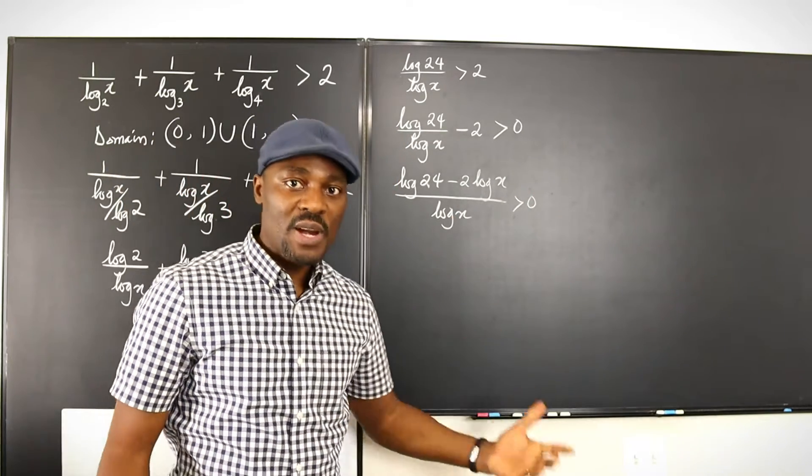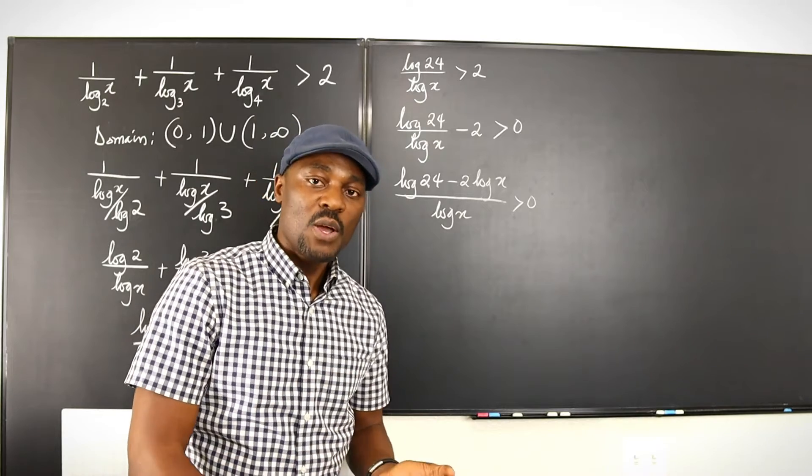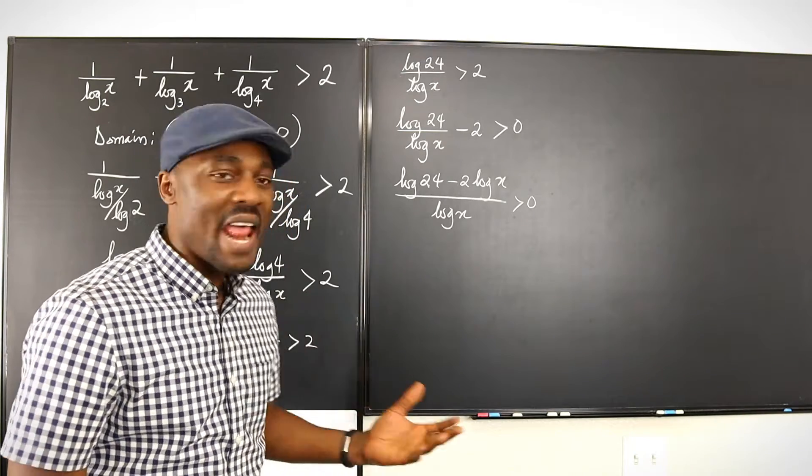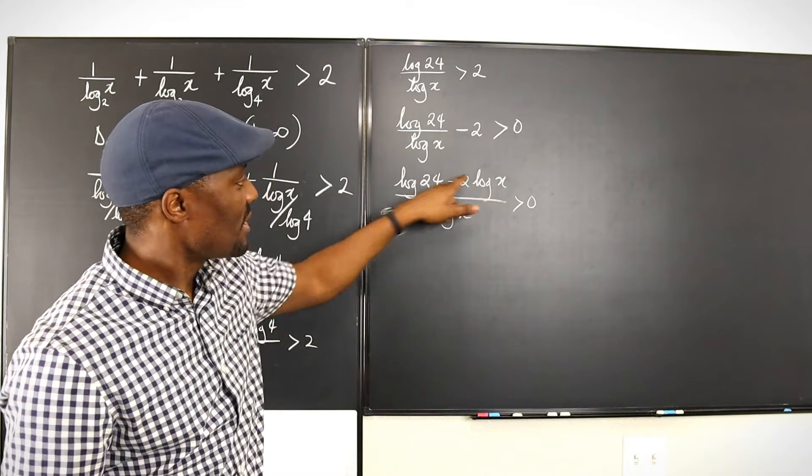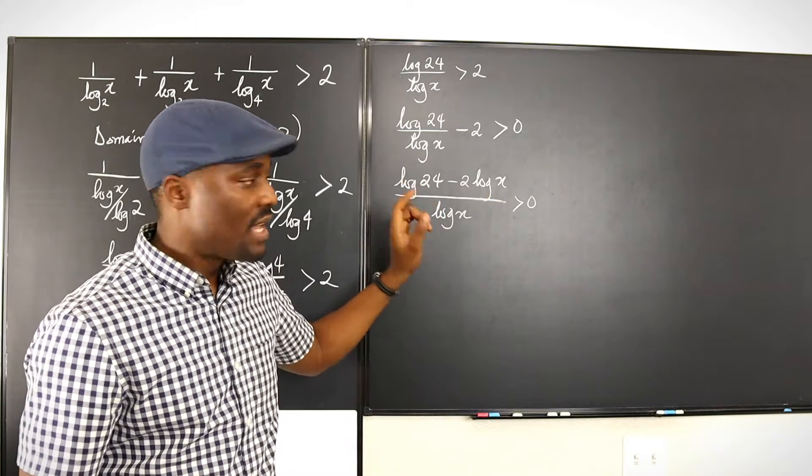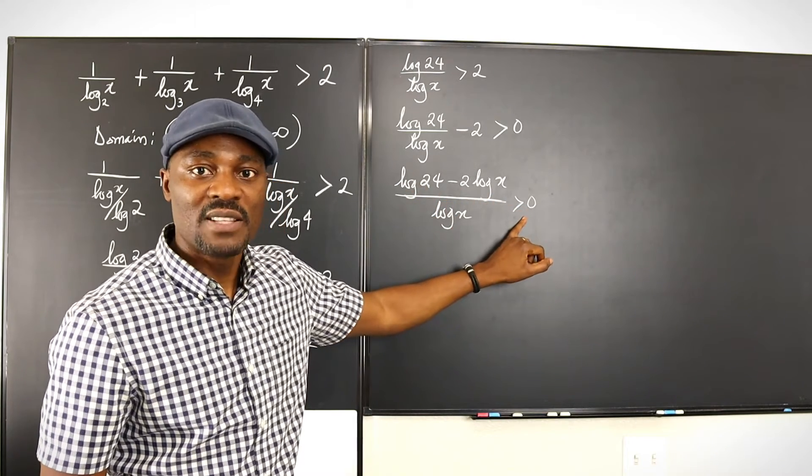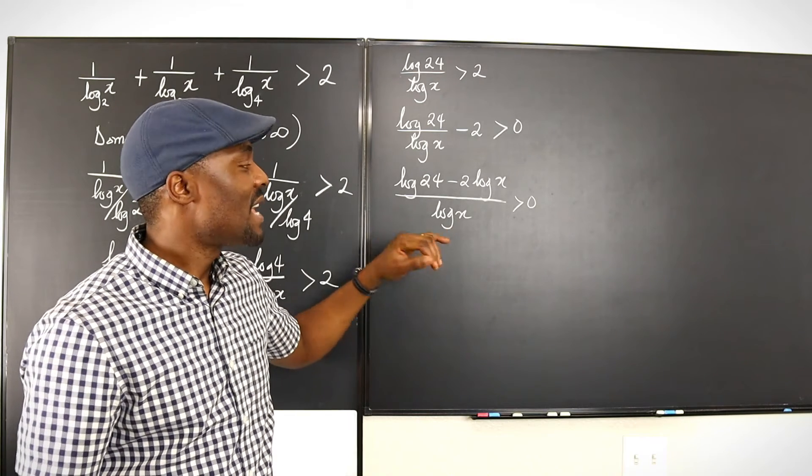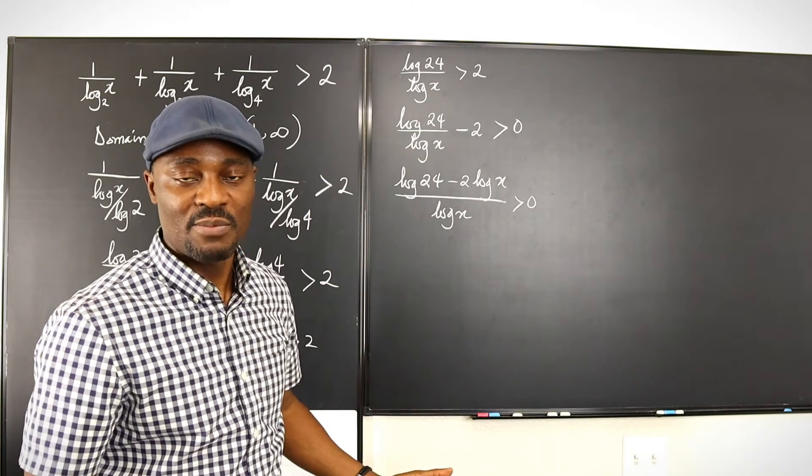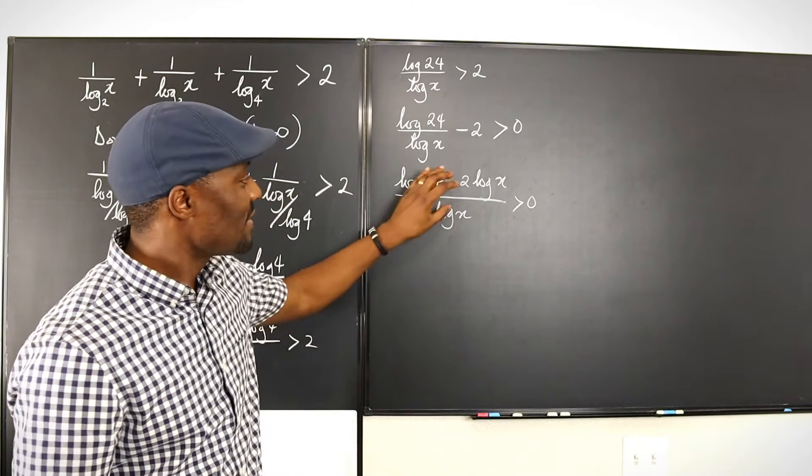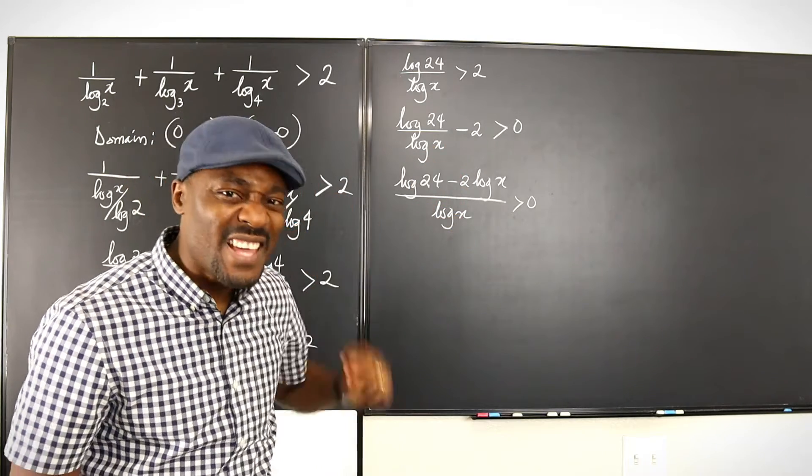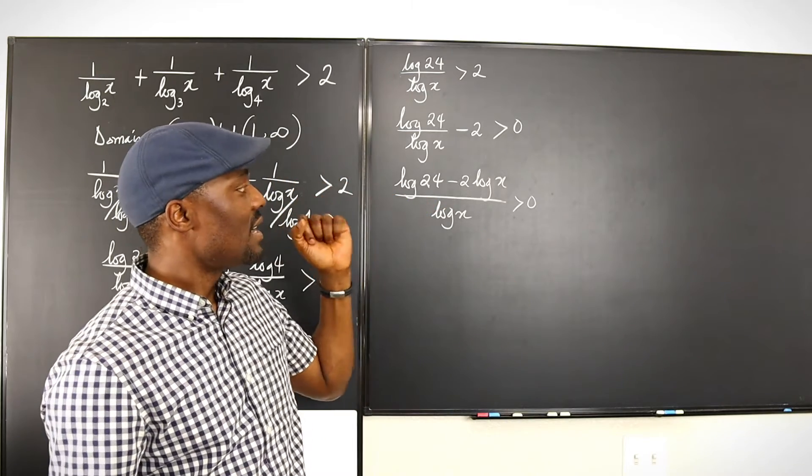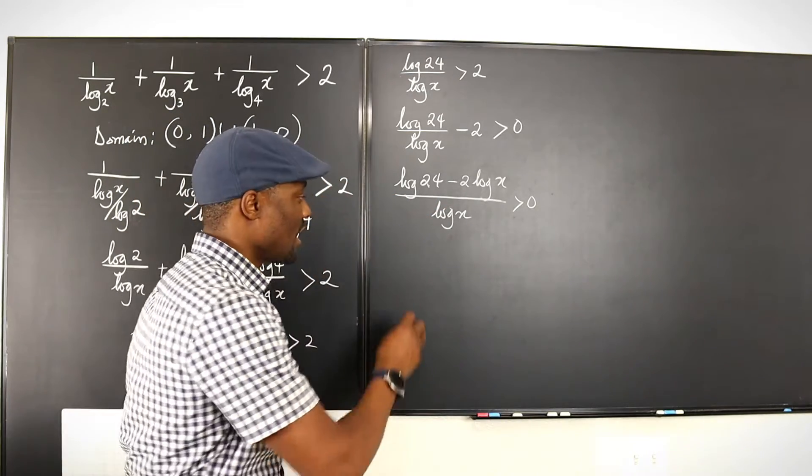Now this is where we need the critical values. Remember, the critical values will be the values that you shouldn't have actually, because if you have them, something might happen. For example, if the top expression becomes zero, then you can't have something greater than zero. If the bottom expression becomes zero, you will have an undefined expression. We don't want undefined expressions. So let's get the critical values from the numerator and the denominator and then do our testing.